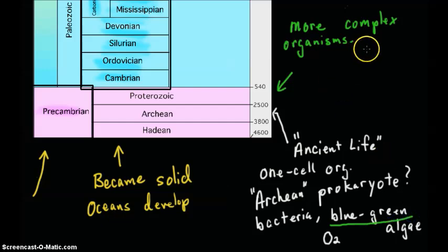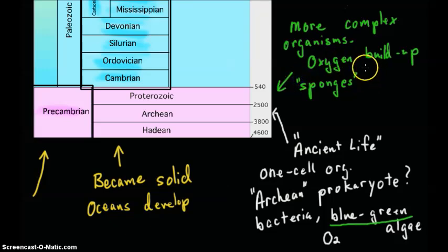This is where we get oxygen buildup into our atmosphere. The types of organisms become more complicated, and over time we get even more complicated multi-celled animals. For instance, sponges started to appear, and then the development of other sea creatures. It's also the time when the continents